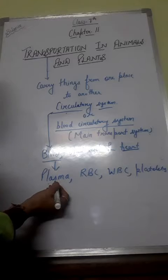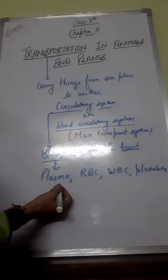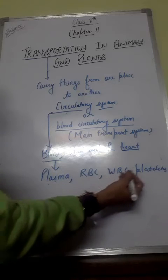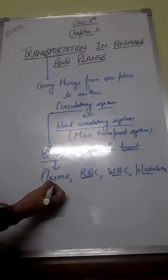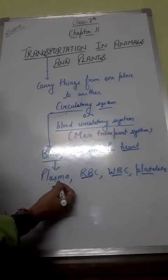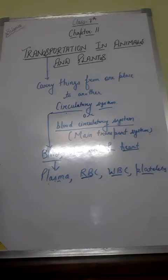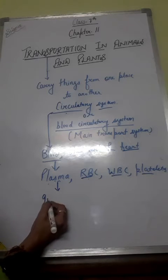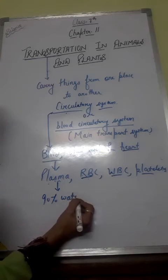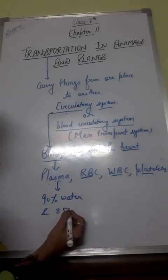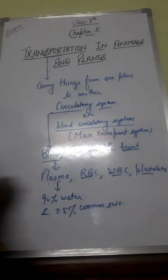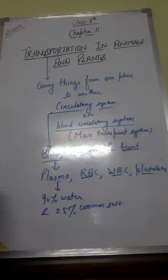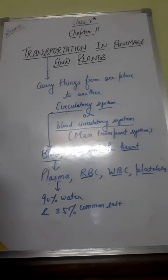The first component of blood is plasma. Plasma is a liquid in which RBCs, WBCs, and platelets flow. Plasma is a sticky liquid part of the blood which is pale yellow in color, and it is 90 percent water and 3.5 percent common salt. It also contains dissolved substances such as digested food and waste products, and carries them from one part to another part in our body.